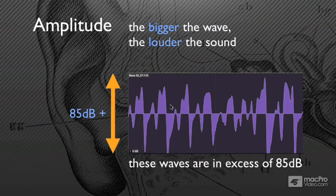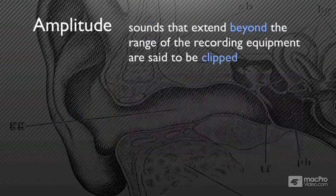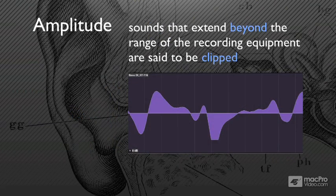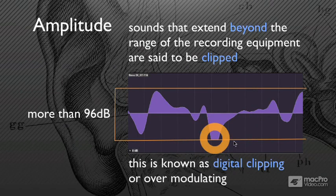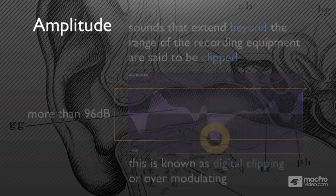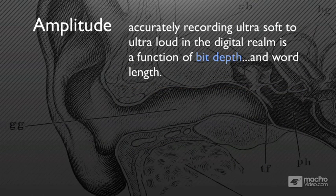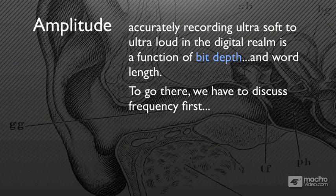These waves here are in excess of 85 dB. The dynamic range of digital audio — CD quality, 44.1k 16-bit audio — is 96 dB. Areas like this that are just clipped, topped off, bricked, are known as digital clipping or distortion. You clipped the signal — or as some guys say, you're over-modulated, which is fancy for saying you turned it up too loud. So accurately recording ultra soft to ultra loud in the digital realm is a function of bit depth: 16, 24, 32. But we first have to have a little discussion about frequency, so that's next.